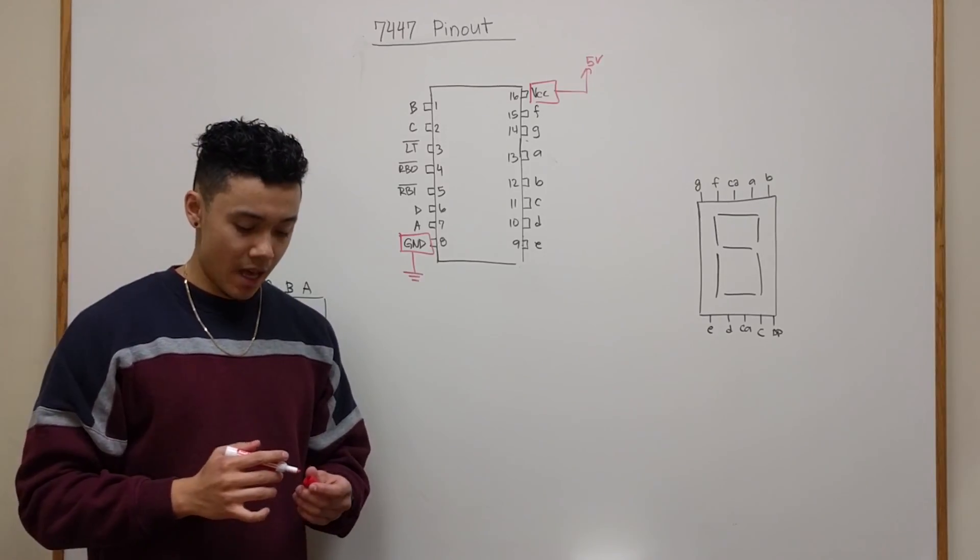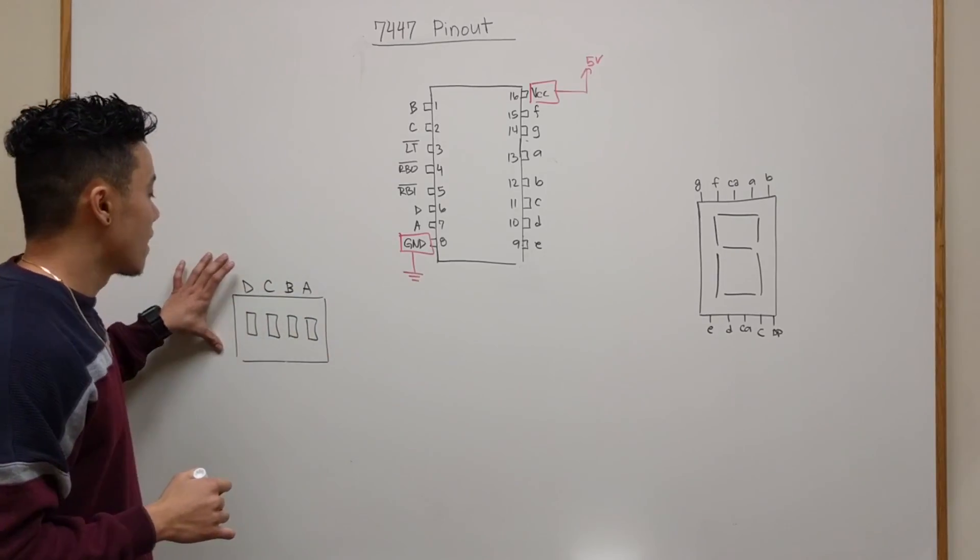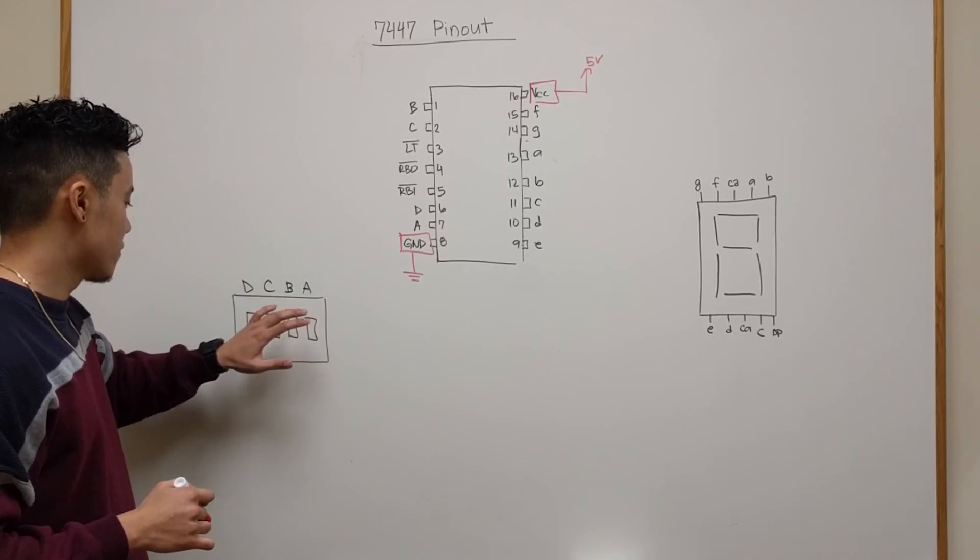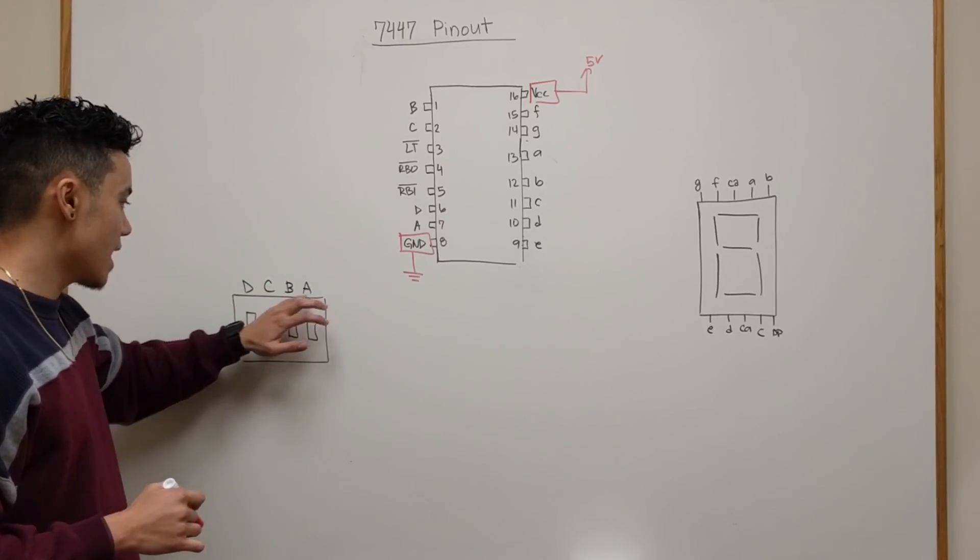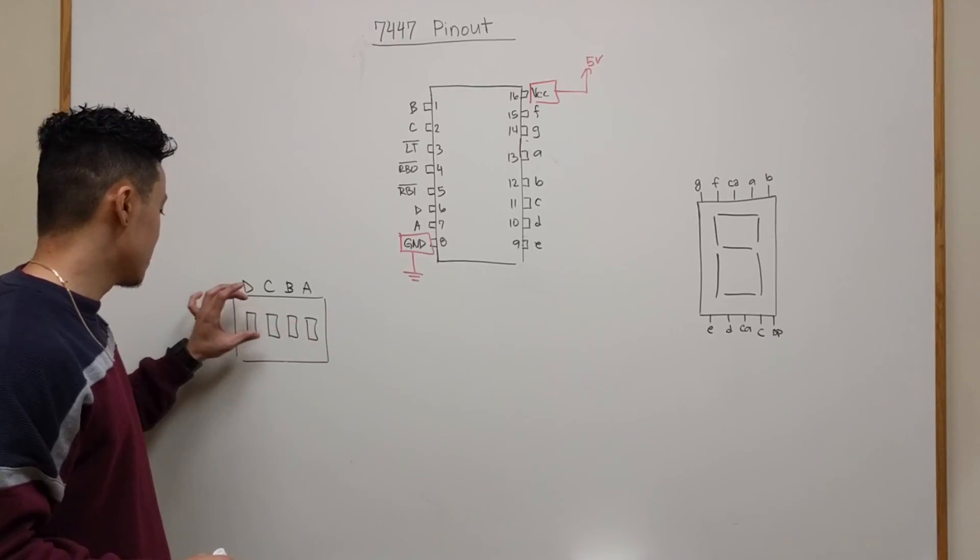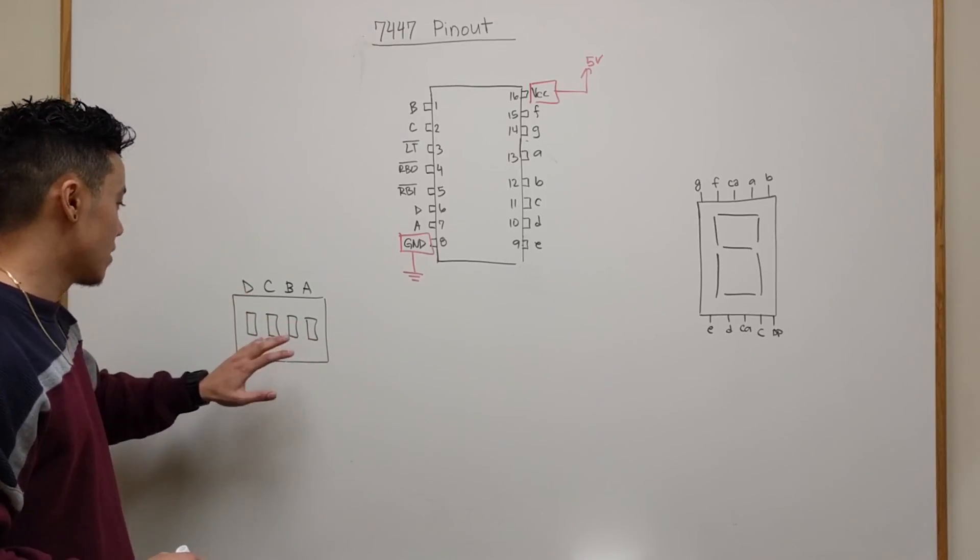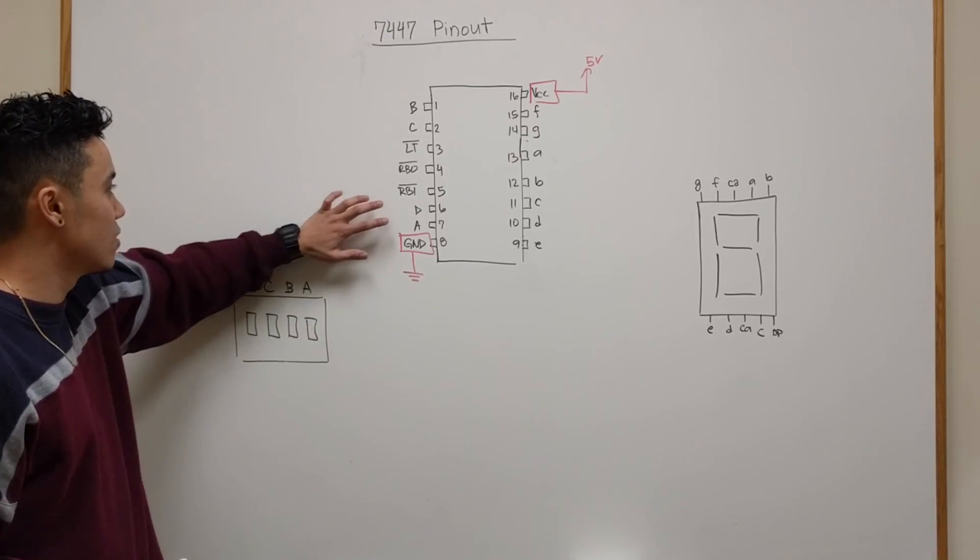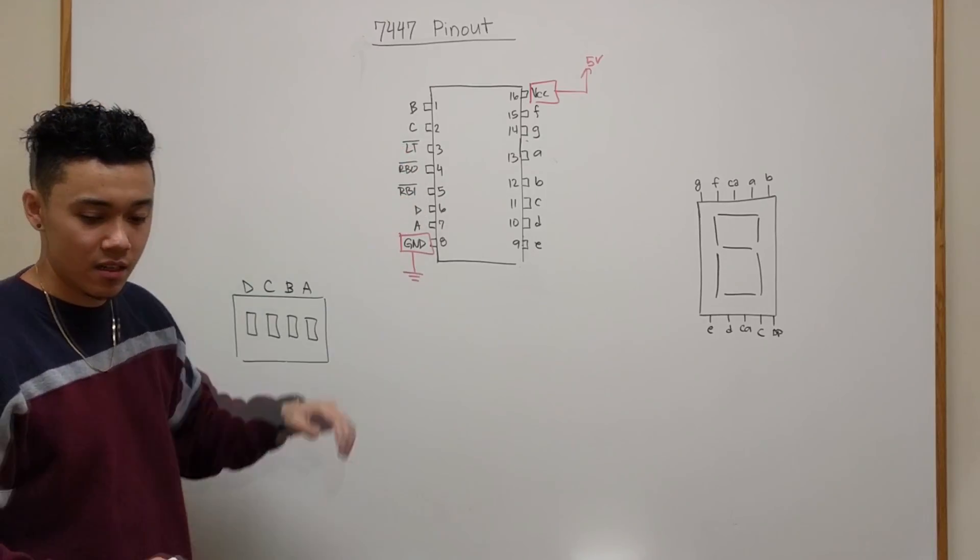Next we're going to take a look at our input side. For our inputs we have four inputs: A, B, C, and D. A being our least significant bit and up to D which is our most significant bit. We're going to connect these directly to A, B, C, and D as seen here.